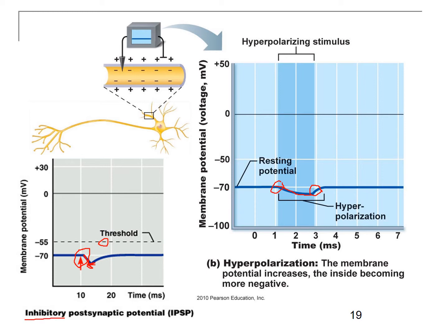This inhibitory signal inhibits the start of an action potential. These stimuli occur at the postsynaptic membrane, so this is a postsynaptic potential that is inhibitory — therefore it is an IPSP, an inhibitory postsynaptic potential. An IPSP is the same thing as a hyperpolarization.